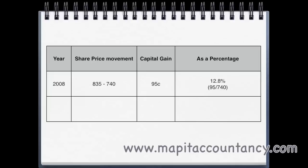For 2009, the share price went down from $8.35 to $6.48 — that's actually a capital loss of 187 cents. We need to log that in our minds because when we do our discussion, that's something we need to address. As a percentage, that is a 22.4% drop.